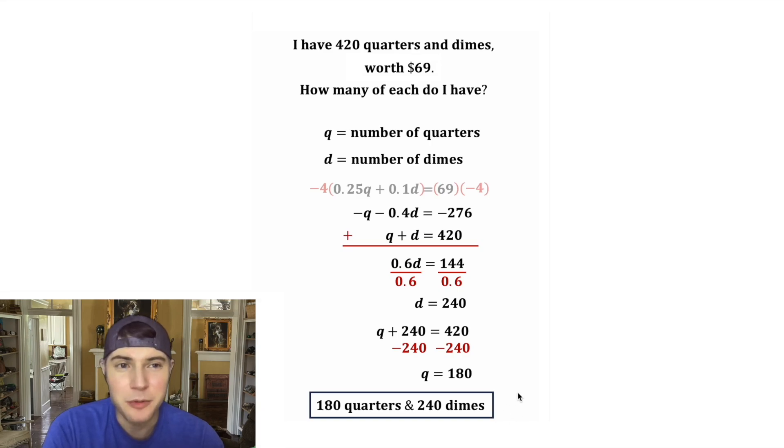So 180 quarters and 240 dimes would be 420 coins equal to exactly $69. How exciting.